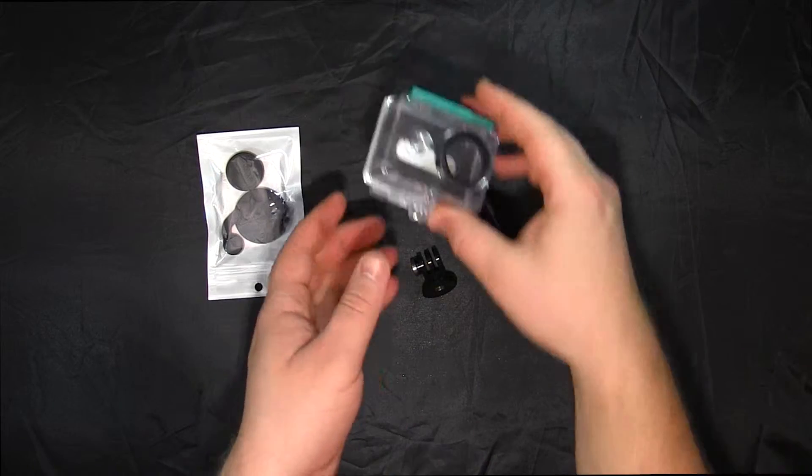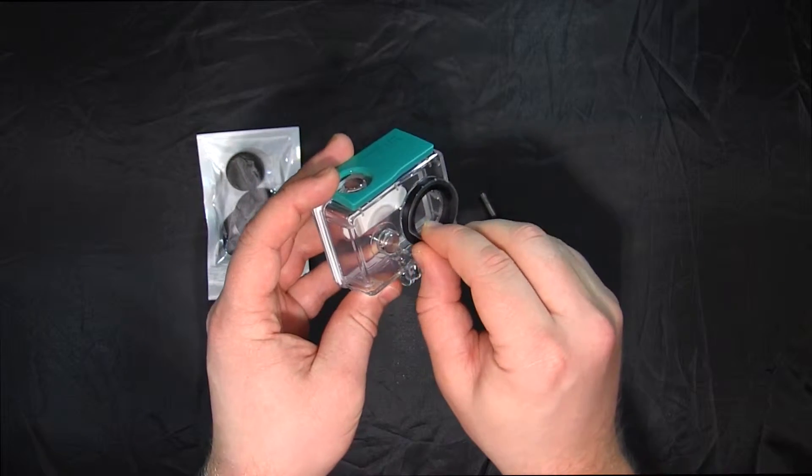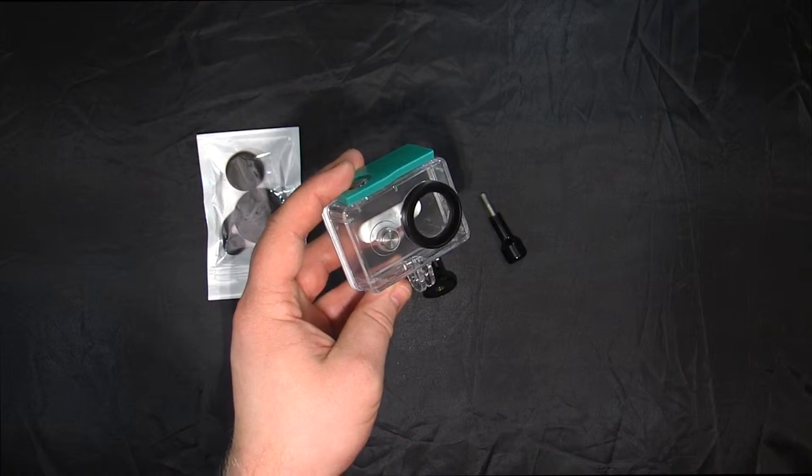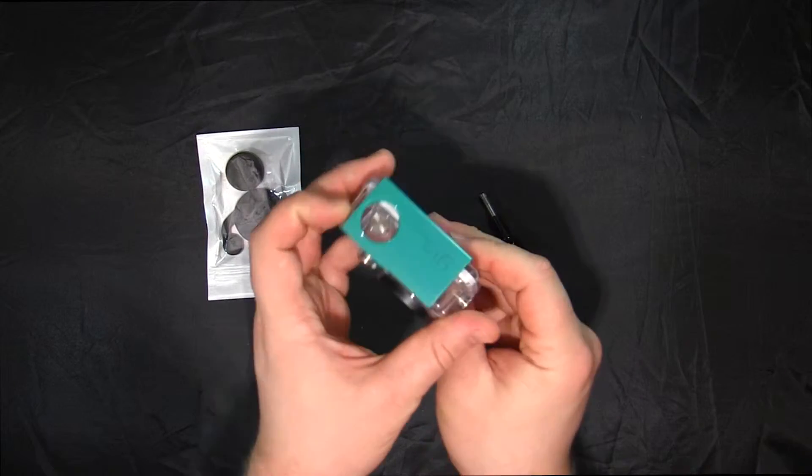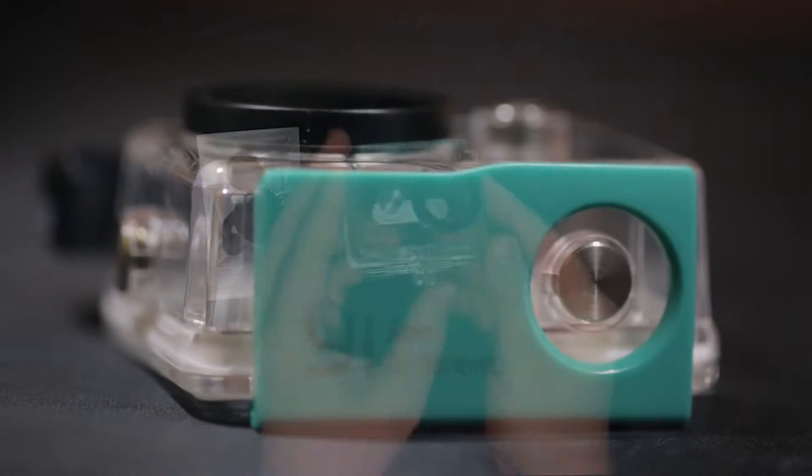Ну что же, давайте снимем защитную пленку и посмотрим поближе на этот кейс. На верхней стороне корпуса размещен логотип EI и надпись «Смотри по-другому».